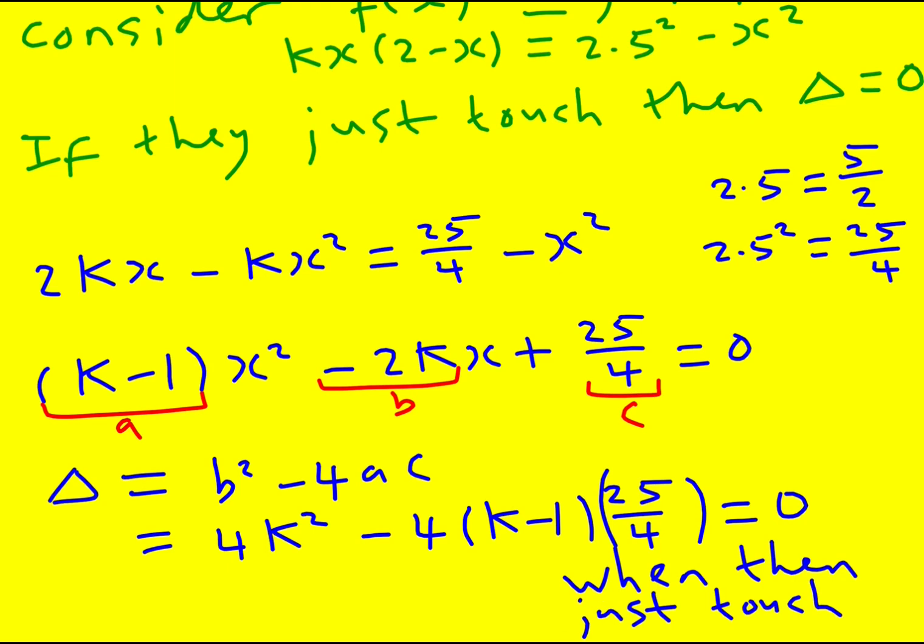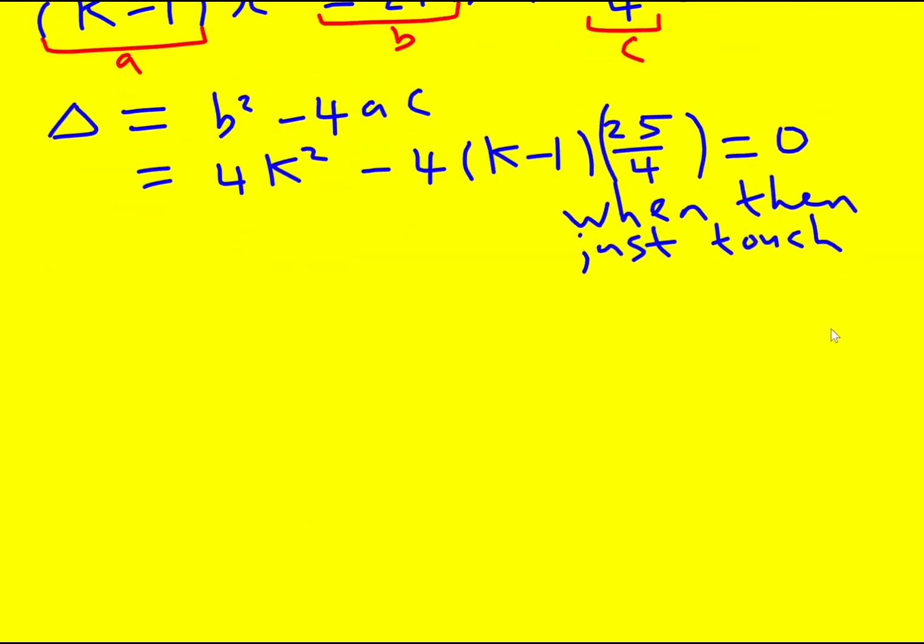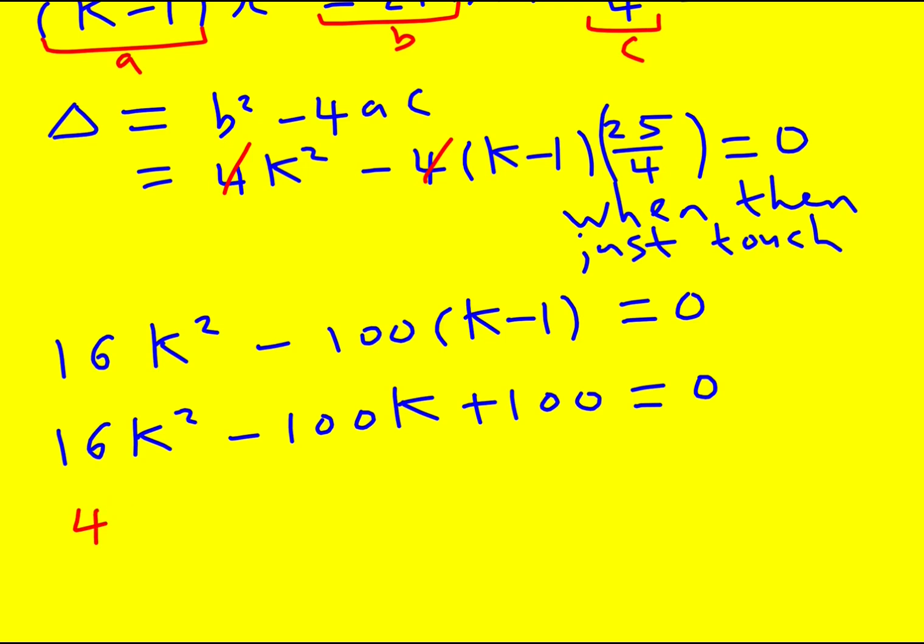So it's going to become 2kx minus kx squared equals 25 over 4 minus x squared, and that means k minus 1 times x squared minus 2kx plus 25 over 4 equals 0. So we've got this quadratic equation and we're trying to find the value of k where they just touched. So we need to set the discriminant equal to 0. The discriminant equals b squared minus 4ac. These are our coefficients. So it's going to become 4k squared, that's my b, that is my a, that is my c, so b squared minus 4 times k minus 1 times 25 over 4 equals 0 when they just touch.